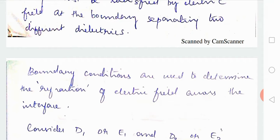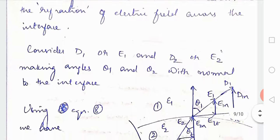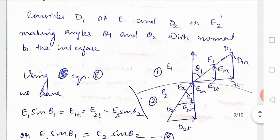The boundary conditions are used to determine the refraction also. For that we are considering this figure. Consider D1 or E1 and D2 or E2 making angles theta1 and theta2 with the normal to the interface.